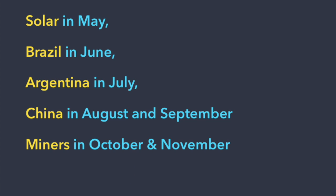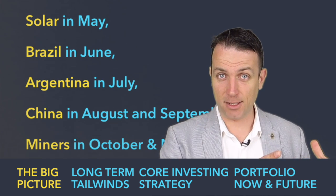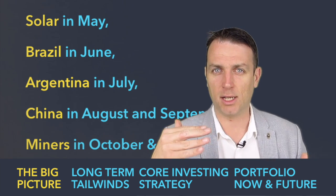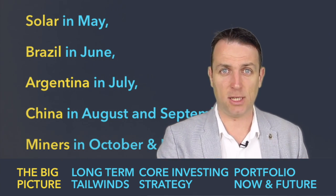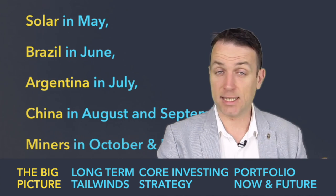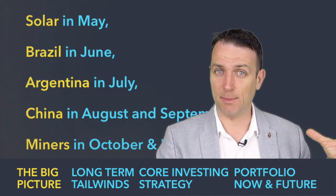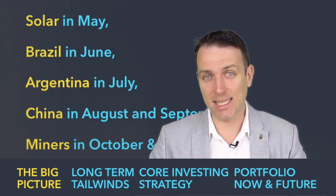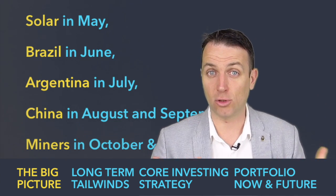If you look at my channel or research platform, you'll see that I spoke about solar in May, Brazil and Argentina in June and July, China in August and September, and now I'm discussing gold miners and copper miners in October and November. Most of those sectors have been or have become relatively cheap. Argentina and Brazil were cheap — now they are a little more expensive. China was cheap and is still there. Solar was still a bit expensive in May when I looked at it, and I had the research ready but didn't buy anything when it crashed.